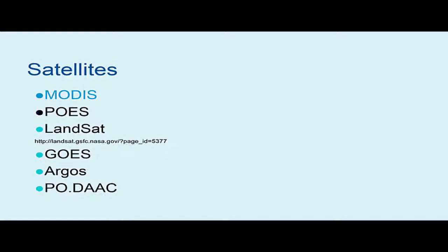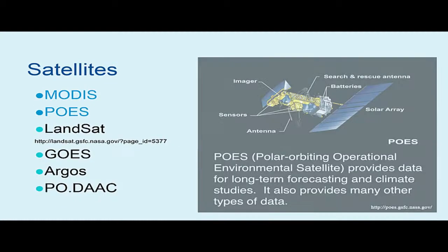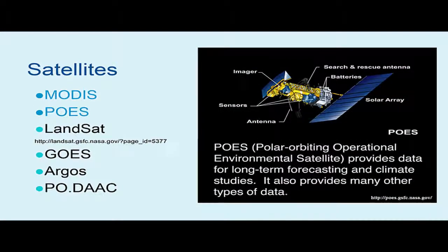The Polar Operational Environmental Satellite, or POES, offers daily global coverage. POES carries an instrument package that provides visible, infrared, and microwave data. This data series supports weather analysis and forecasting, climate research and prediction, global sea surface temperature measurements, atmospheric soundings of temperature and humidity, ocean dynamics research, volcanic eruptions monitoring, forest fire detection, global vegetation analysis, search and rescue, and many other applications.